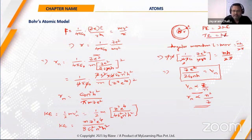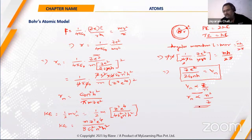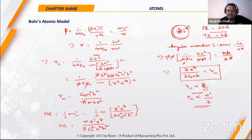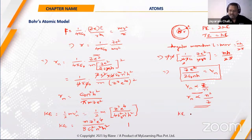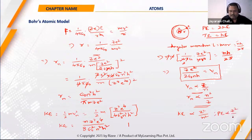This relation — that potential energy equals twice the kinetic energy, or kinetic energy equals potential energy divided by two — can only be used in bounded systems, such as an electron bound to the nucleus, or in gravitation. Kinetic energy is proportional to Z²/n², potential energy is proportional to Z²/n², and total energy is also proportional to Z²/n².